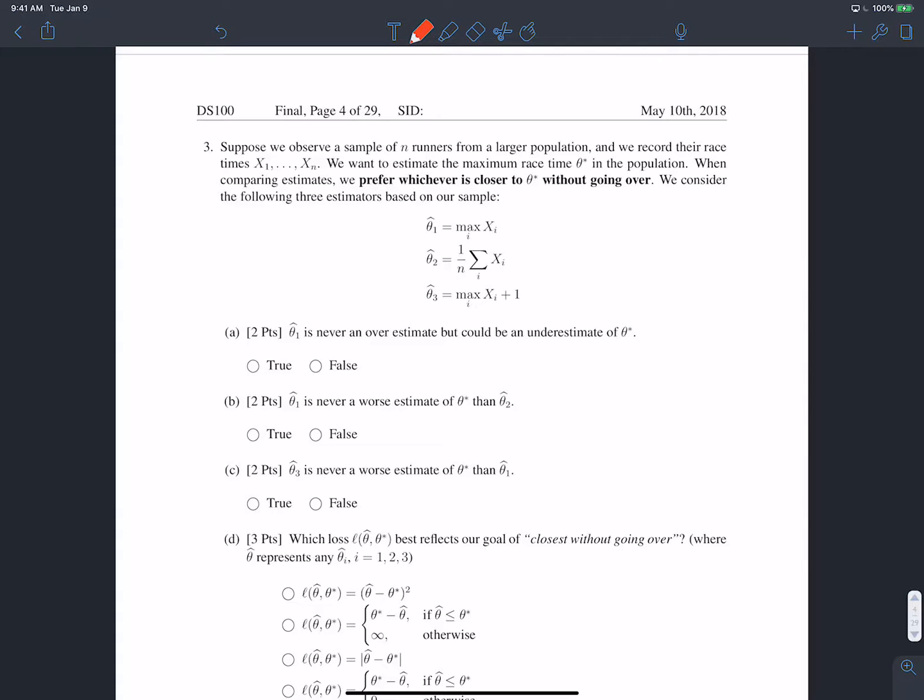So first, we're given some true or false questions. A asks, theta 1 is never an overestimate, but could be an underestimate of theta star. So that's true. And to see why that's the case, let's look at these two possible cases.